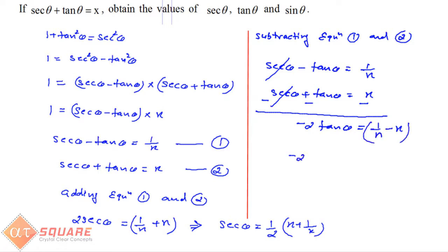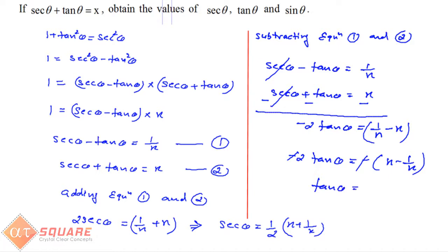So -2 tan θ = 1/x - x. We take minus common so the minus signs cancel, and we get tan θ = ½(x - 1/x). That's the value of tan θ.